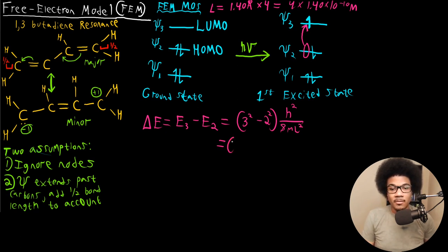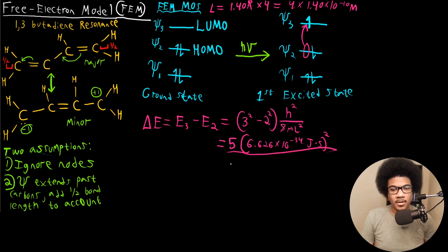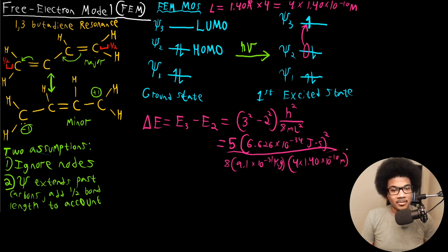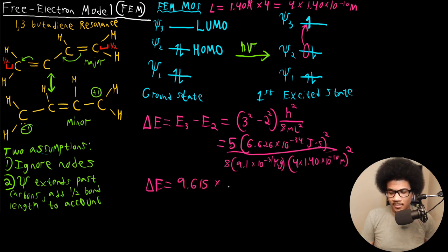Now that we have L, we can plug everything in and solve. 3 squared is 9, 2 squared is 4, so there's a factor of 5 on the outside. Times Planck's constant, 6.626 times 10 to the negative 34 joule-seconds, squared, over 8 times the mass of an electron, 9.1 times 10 to the negative 31 kilograms, times the length of our box, 4 times 1.40 times 10 to the negative 10 meters, squared. You get an excitation energy of 9.615 times 10 to the negative 19 joules.